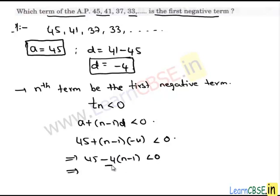Let us transpose negative 4 times (n minus 1) to the right side of the inequality. Then we have 45 is less than 4 times (n minus 1).